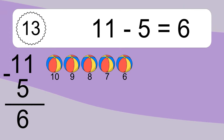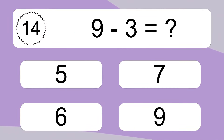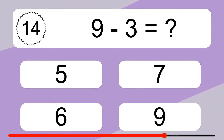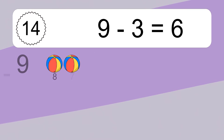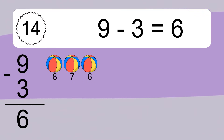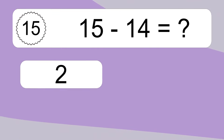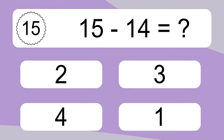8, 7, 6. 9 minus 3 equals what? 9 minus 3 equals 6. Let's count it: 8, 7, 6. 15 minus 14 equals what?